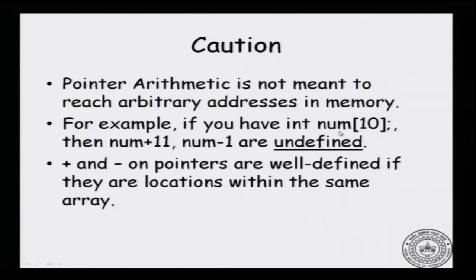For example, if you have int num[10], then num plus 11 is not a valid location in the array. Similarly, num minus 1 is also out of bounds — num[0] is equivalent to num+0, so num-1 is outside the array. These are undefined locations; C does not guarantee meaningful information if you try to dereference them. Plus and minus on pointers are well defined only when navigating within the bounds of an array.